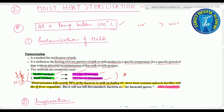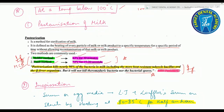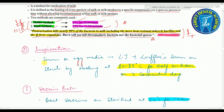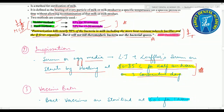Pasteurization kills nearly 90% of bacteria in milk, including the heat-resistant tubercle bacillus and the Q fever organism, but it does not kill thermoduric bacteria or bacterial spores — important point. Second method at below 100°C is inspissation: serum or egg media such as Lowenstein-Jensen (LJ) medium and Loeffler serum are sterilized by heating at 80–85°C for half an hour on three consecutive days.